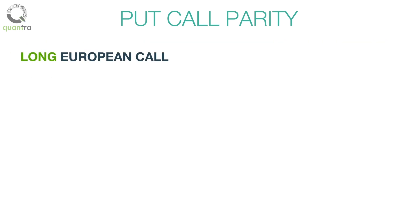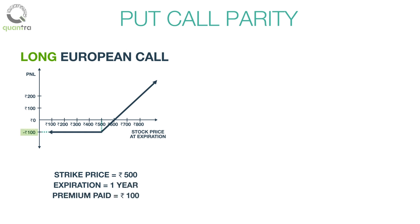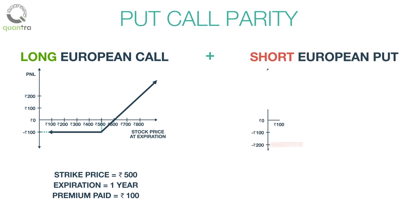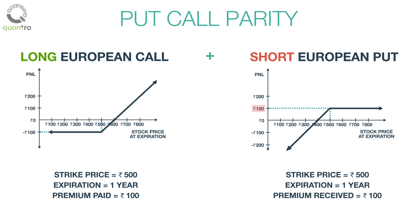Suppose that you purchase a European call option for ABC stock at the strike price of 500 rupees. The expiration date is one year from now, and the premium you pay is 100 rupees. You also sell a European put option for ABC stock at the same strike price and expiration date, and you receive 100 rupees as a premium.